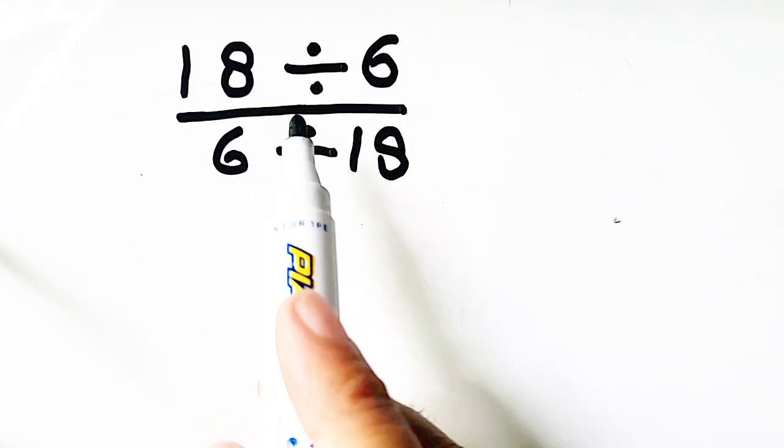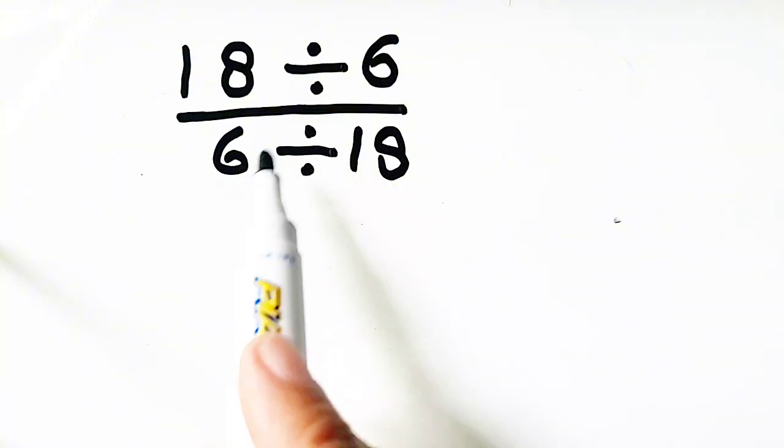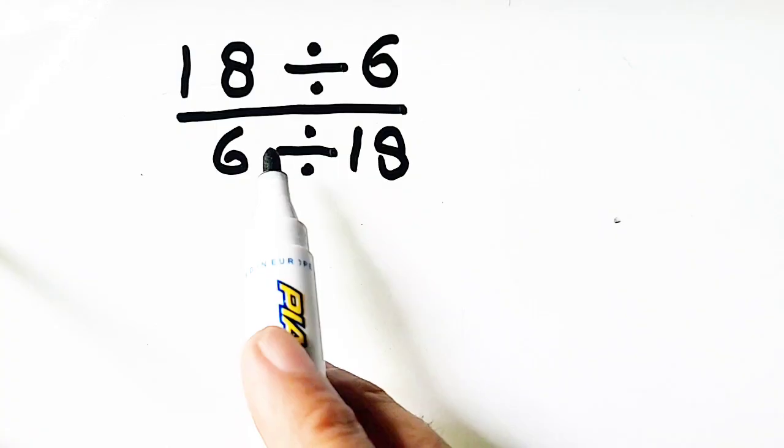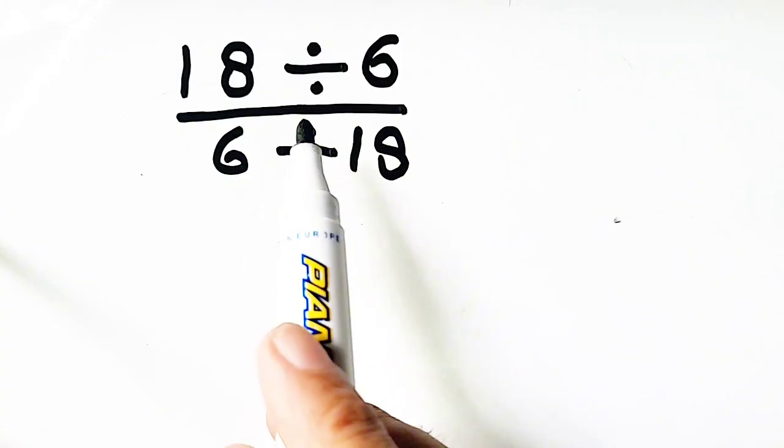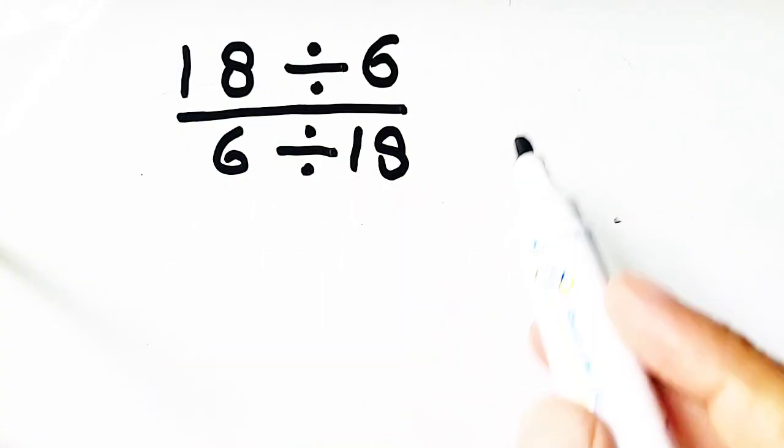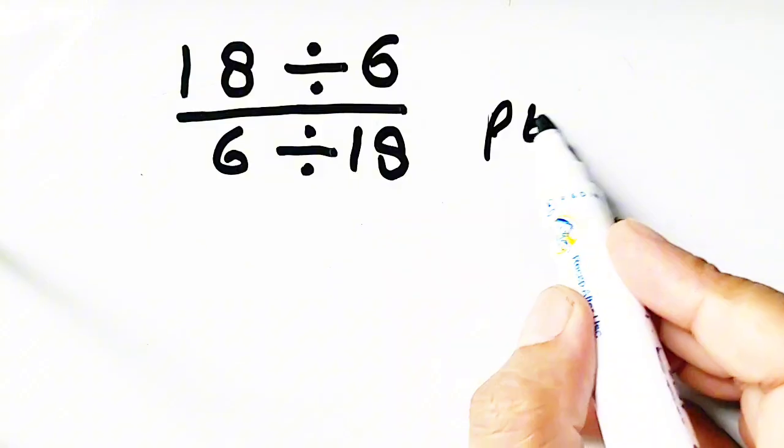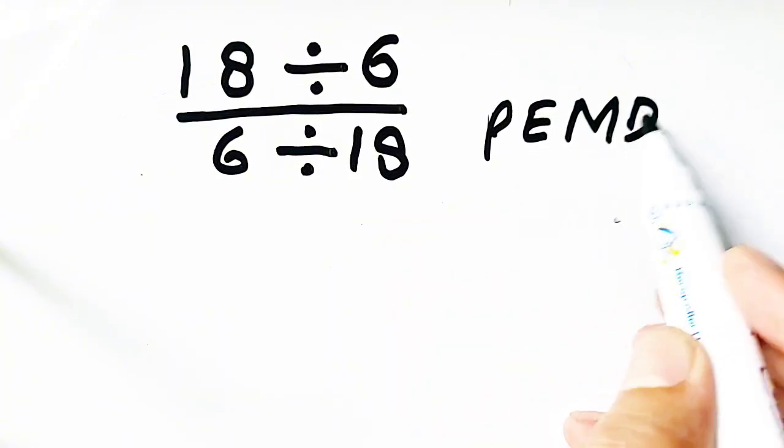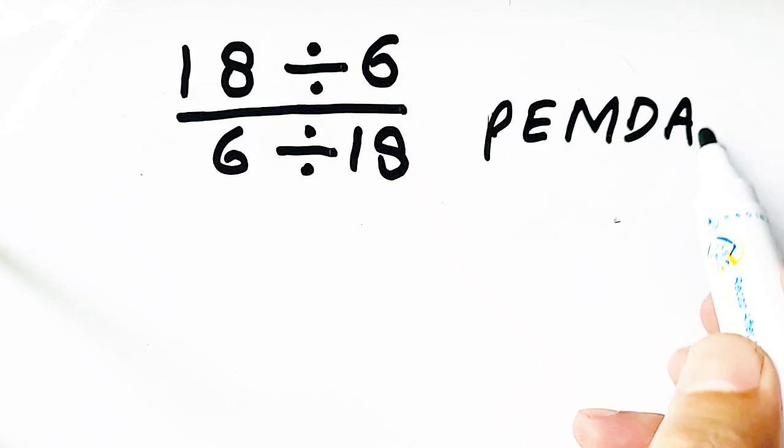We can solve this question by using the PEMDAS rule. PEMDAS rule is: first of all, we have to solve parenthesis, then exponent, then multiplication, division, and finally addition and subtraction.